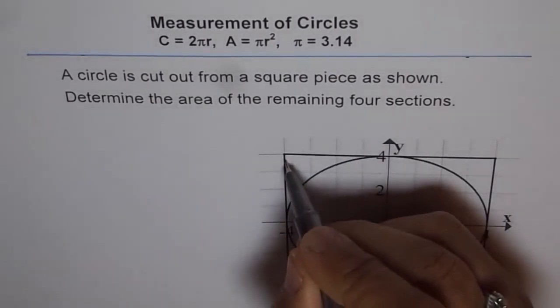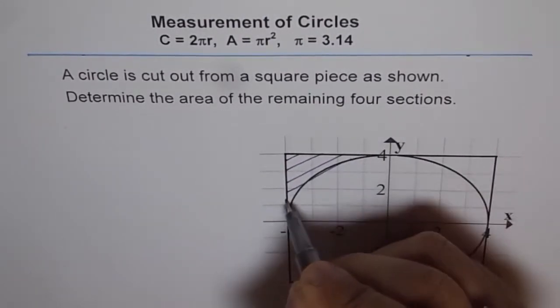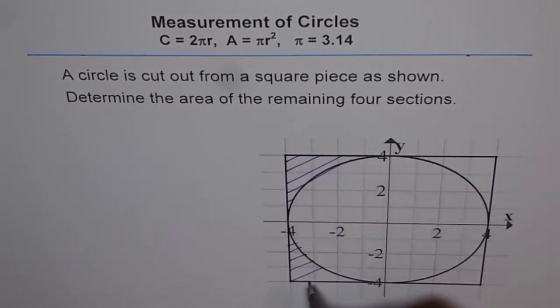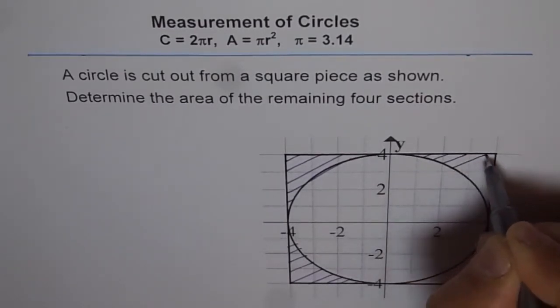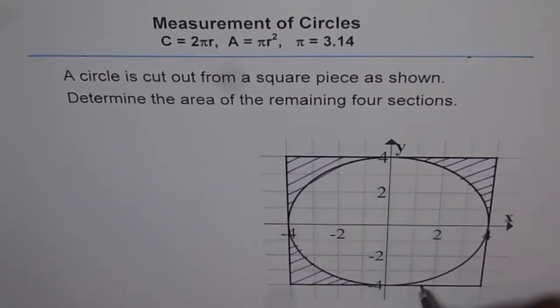So the four sections are these. This is the first section, like these four corners basically. So that is how we can just shape this out. And so it is very clear which four sections we are talking about. It is these four sections.